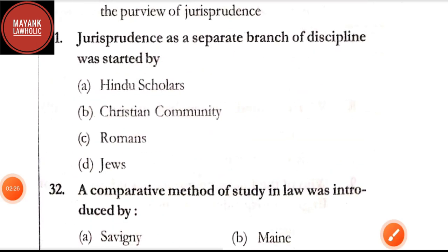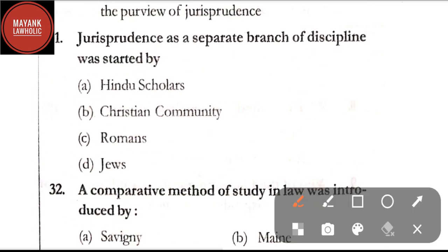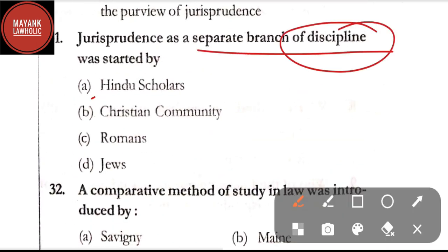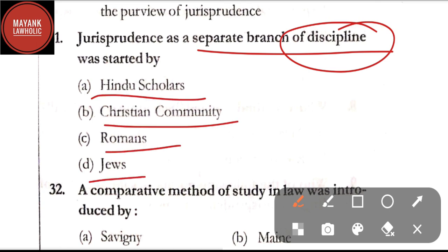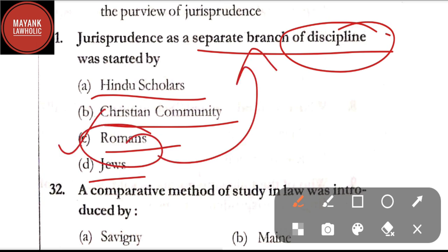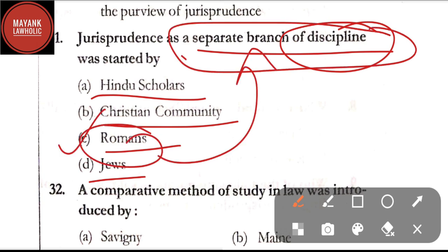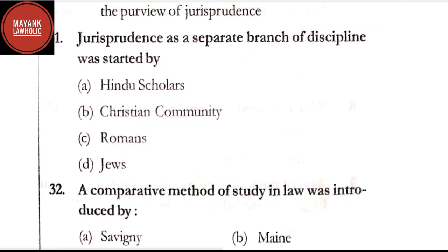Question number 31: jurisprudence as a separate branch of discipline was started by — option A: Hindu scholars; option B: Christian community; option C: Romans; option D: Jews. The correct answer is option C, Romans. Jurisprudence as a separate branch of discipline was started by Romans.